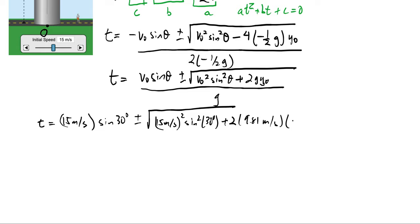Plus 2 times 9.81 meters per second squared, times the initial height here, which is the 10 meters. Put that all in, divide by 9.81 meters per second squared, and if I plug that into my calculator, I get two answers.